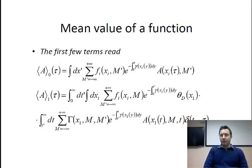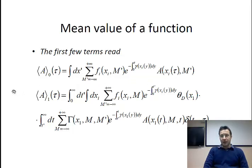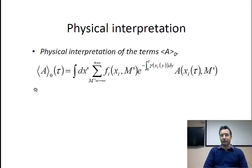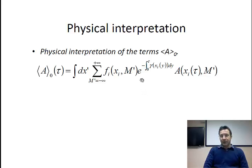If we proceed ahead, we can show that the first term A0 can be written as a specific expression containing an exponential. From a Monte Carlo mathematical point of view, this exponential represents the probability that a particle starting at phase space coordinates X and M' stays on that trajectory. This is given by the exponential term, which gives you this probability.